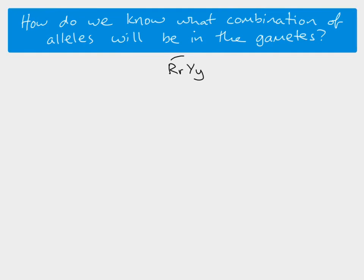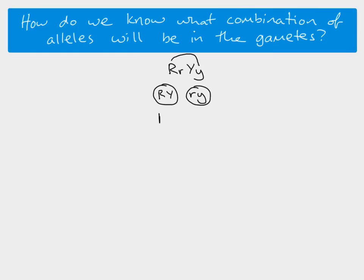So we can just look at the combinations. You could have the big R — the chromosome that this allele is on — combining with the chromosome that this allele is on. Or these two could combine, or these two, and then finally these two. So with our heterozygous individual, there are four possible gametes that can be formed. It's important to notice that each of these gametes has got one allele for each gene inside it.